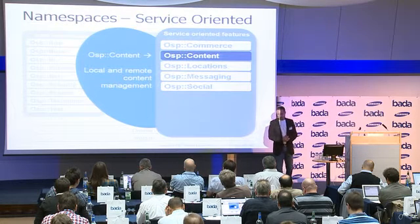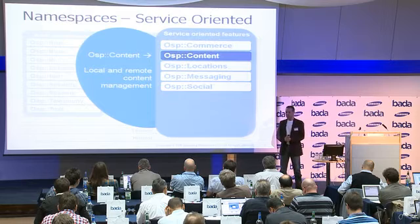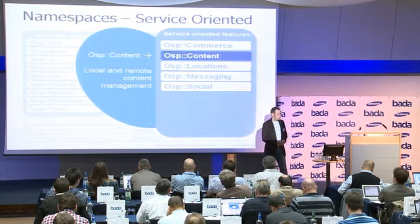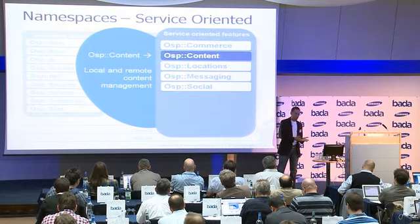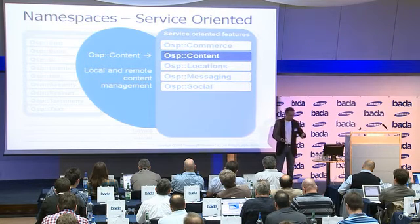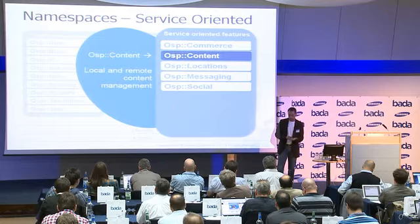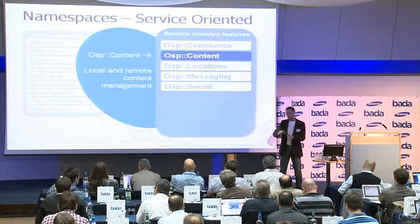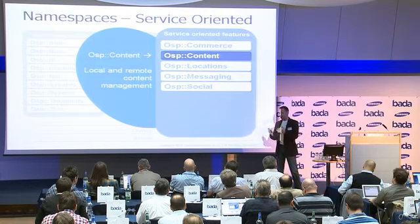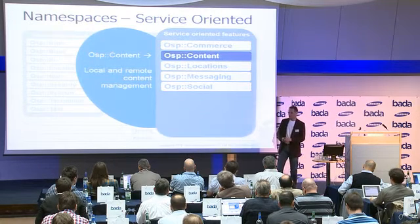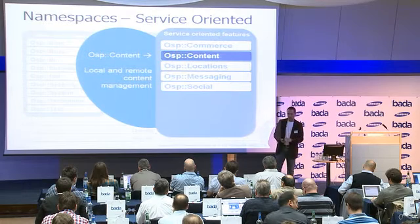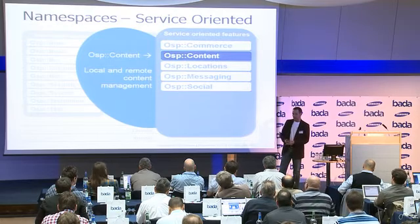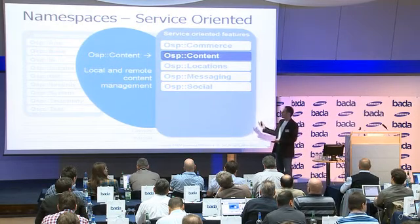Moreover, we have the content namespace. This namespace covers everything which is about content, and we differentiate between two notions: on the one hand we have local content, on the other hand remote content. Local content is pretty obvious — it's everything which is on the device. The nice thing about Bada is that with our API we seamlessly integrate a whole server infrastructure, and as a developer you don't have to mess around with connection establishment, session handling, and such — that is all done by the SDK. The functionality to invoke server-side services is encapsulated in this content namespace.